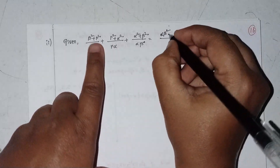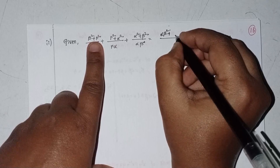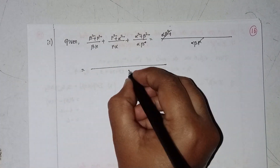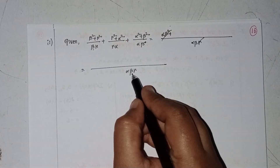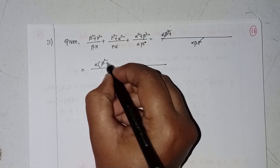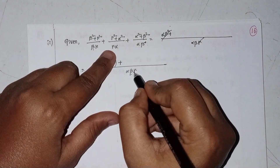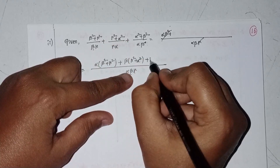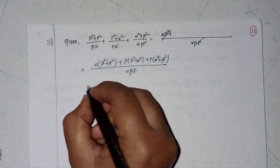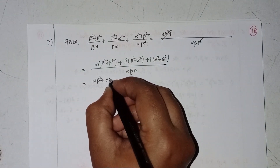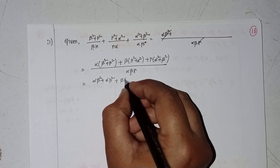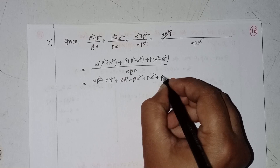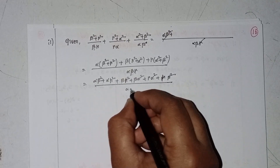After simplification with LCM αβγ, cancelling terms: the numerator becomes α·β² + α·γ² + β·α² + γ·α² + γ·β² divided by αβγ.